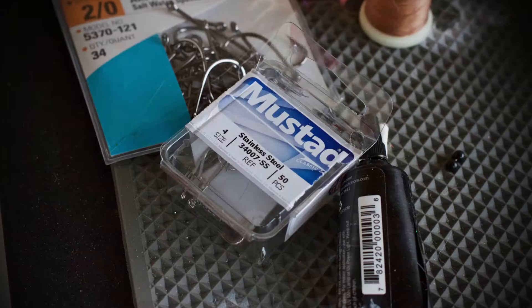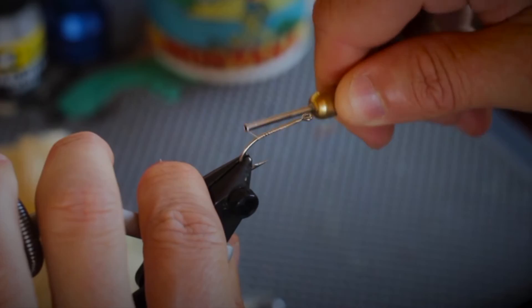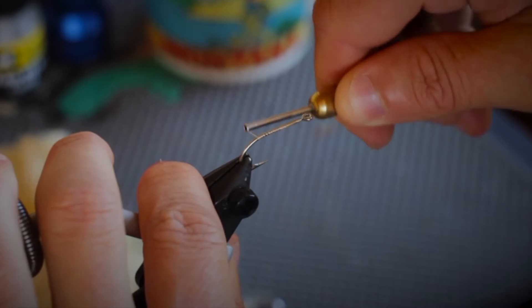We're going to be tying this fly on a number four Mustad 007, and once we have a nice thread base from the eye all the way down to the bend, we're going to go ahead and attach our white small dumbbell eyes.